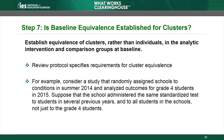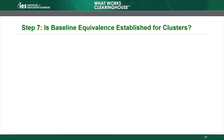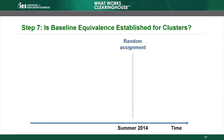Let's consider a specific example. A study randomly assigned schools to conditions in summer 2014 and analyzed standardized test scores for grade 4 students in 2015. Suppose that the school administered the same standardized tests to students in several previous years and to all students in the schools, not just to the grade 4 students. Random assignment occurred in summer 2014, and the study analyzed grade 4 students in 2015.